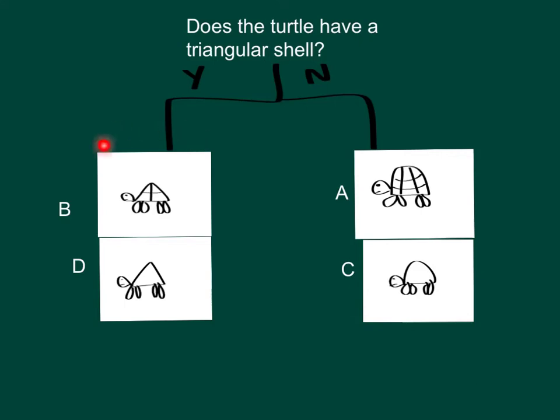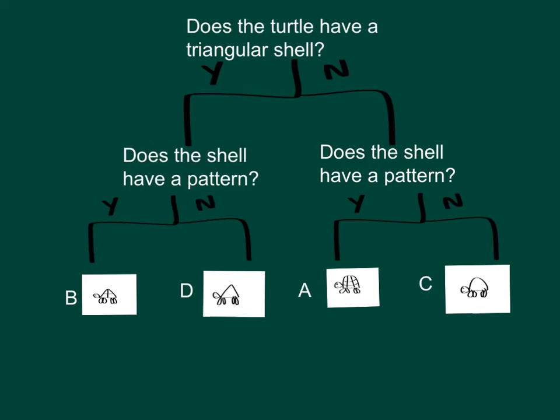Now we need to think about how to separate these out into different groups again. You can see that some of them have a pattern on their shells and some don't. In this case, you can ask the same question twice. So we now ask the second question: does the shell have a pattern? You can ask the same question twice, but you might have different questions for either side of the tree.